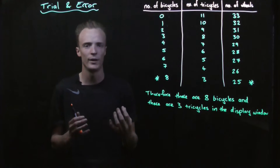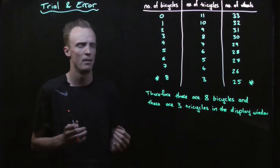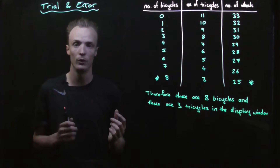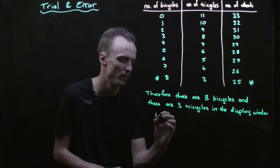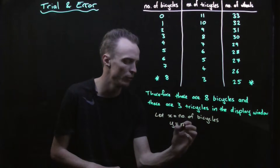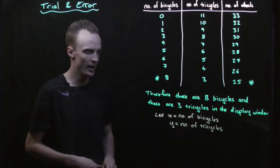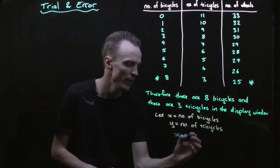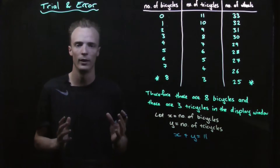So what do we do when we've got that sort of problem? Let's consider the original question. We know that when we add the total number of bicycles with the total number of tricycles that should equal 11. So let's let x represent the total number of bicycles and y represent the number of tricycles, and represent this problem algebraically where the number of bicycles plus the number of tricycles equals the total number of cycles, which was 11.